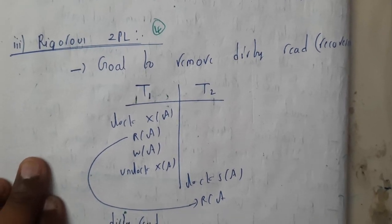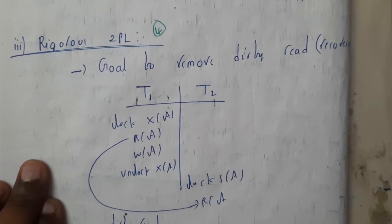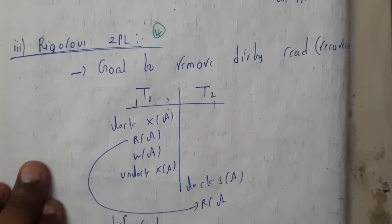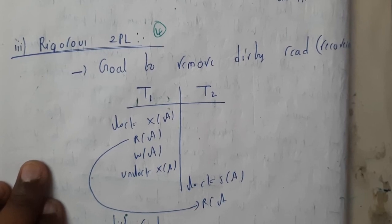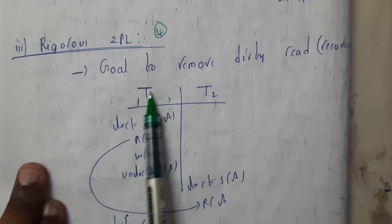Rigorous 2PL helps us in recovering, but we face the same problem as in basic 2PL - deadlock will still occur. The goal of removing dirty read means recovering the data is possible here.